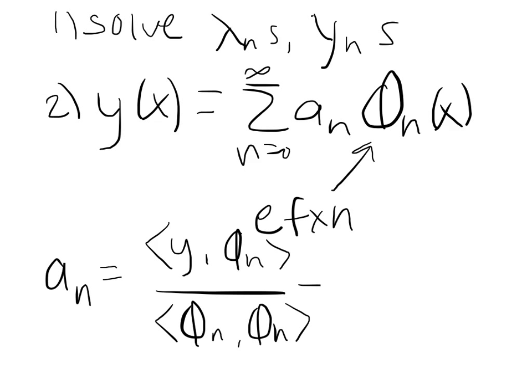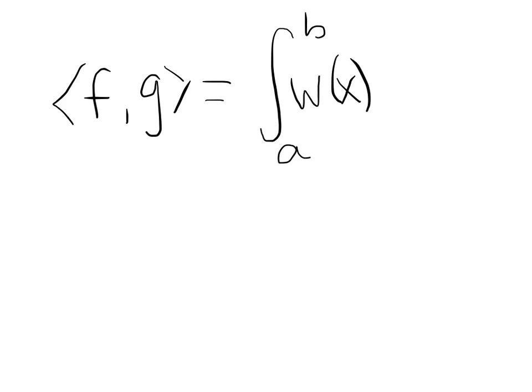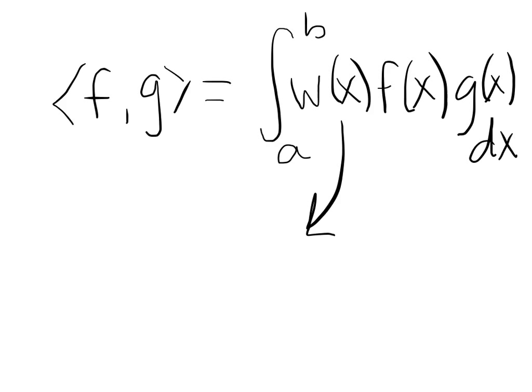Now, the inner product of two functions f and g is defined as the integral along the interval that they're defined at of the weighting function and the two functions multiplied by each other. A lot of times this guy from earlier in the semester was 1, but you can't assume that, so you have to go back and check what w(x) is.